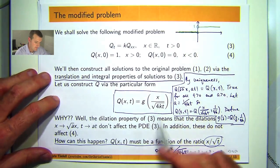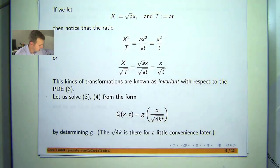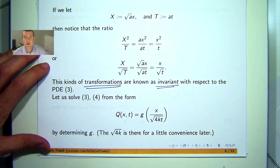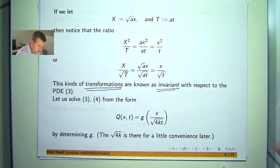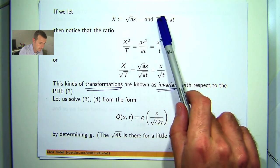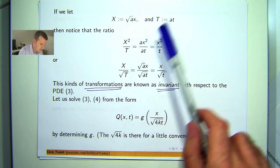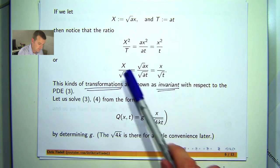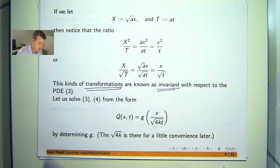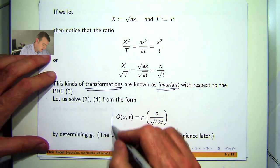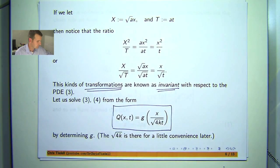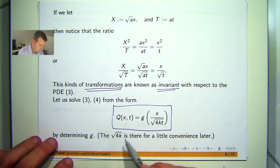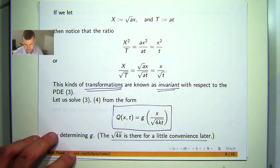Well this type of method is known as producing some sort of invariant transformations. And you can use this idea to solve a whole bunch of PDE and you just essentially look at the ratio. So for example if you let big X and big T be these expressions, then you look at the ratio. So you have the same sort of ratio with these variables over here as you have over here. So in this case we've used something like this ratio. So let's solve 3 and 4, our modified problem if you like, using this particular form. And like I said before the root 4k is there for a little bit of convenience.